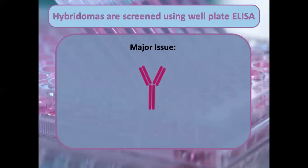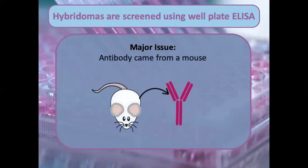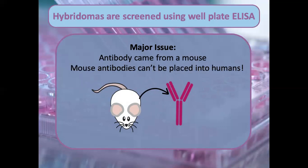There's a big issue at this point: this antibody came from a mouse, and you can't put mouse antibodies directly into humans. You'll cause an immunogenic response — the antibody has particular motifs specific to the mouse that aren't found in humans. If you inject it directly into a human without modification, the human immune system will recognize it as a foreign entity, attack it, and eliminate it before it can have the desired effect.